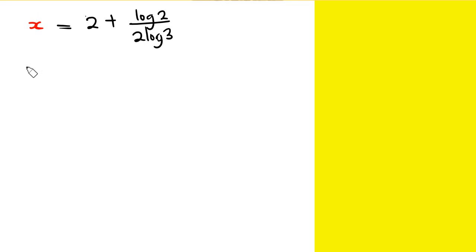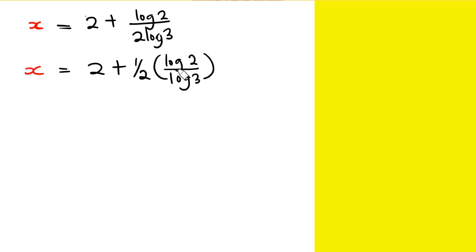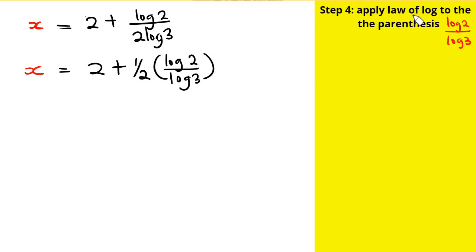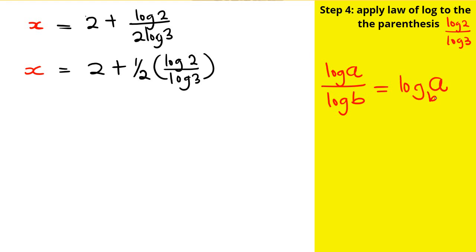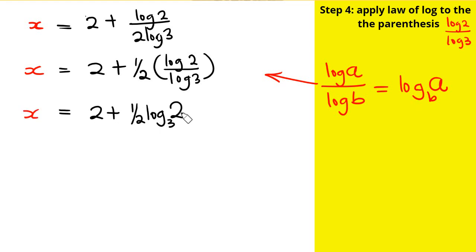This can be written as x equals 2 plus one-half of log 2 over log 3, bringing the half out. Now applying the change-of-base rule: log a over log b equals log of a base b. Applying the same rule here, I'm going to have 2 plus one-half·log 2 base 3.